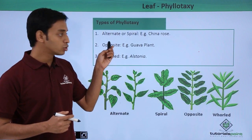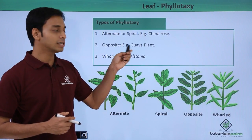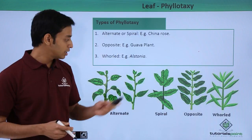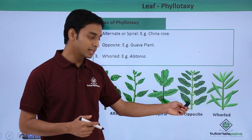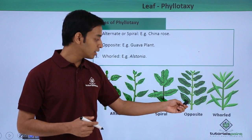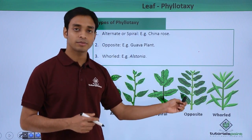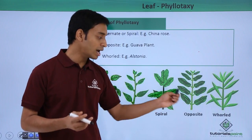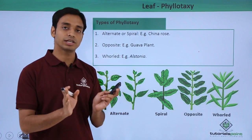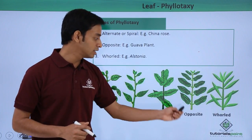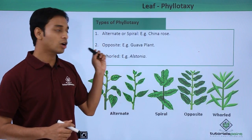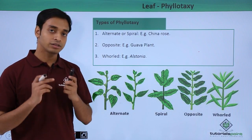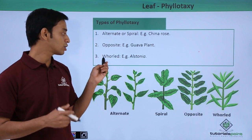The next type is known as opposite phyllotaxy, which is mostly found in the guava plant. In this type, from a single node two leaves come out and they are positioned in the opposite direction. Hence these are known as the opposite type of phyllotaxy.